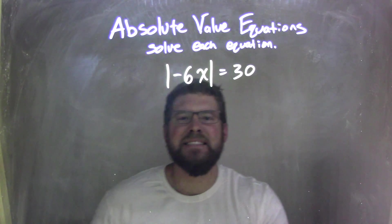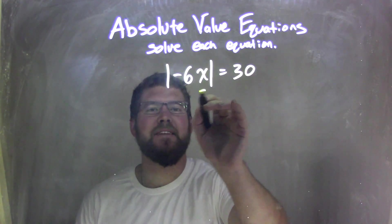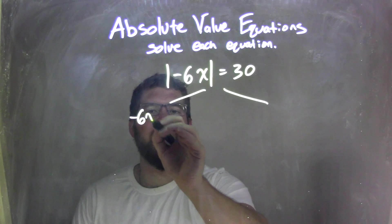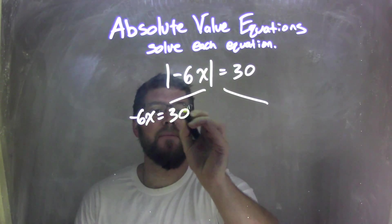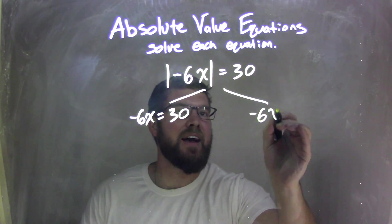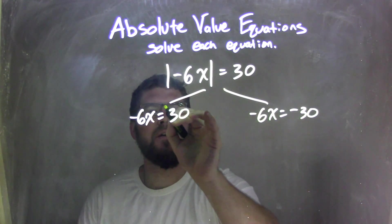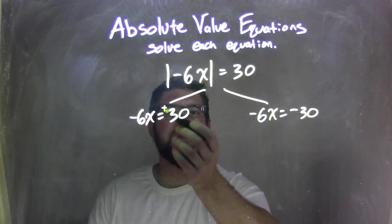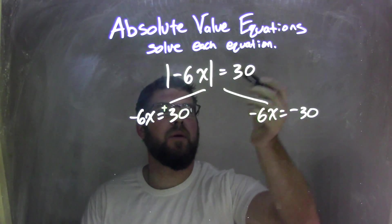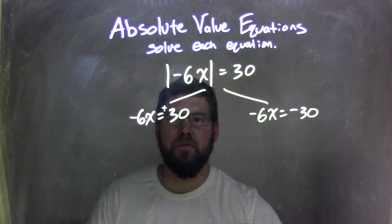And so now I need to separate this equation into two different equations. Negative 6x equals positive 30, and negative 6x equals negative 30. We have a positive 30 and a negative 30. We need to split this up so we have what's on the inside of the absolute value equals positive 30 and also negative 30.